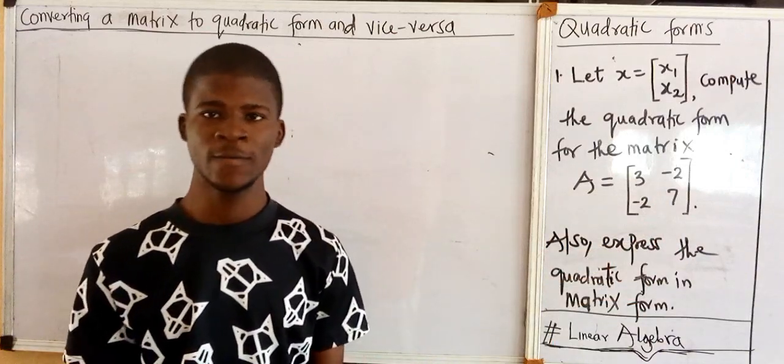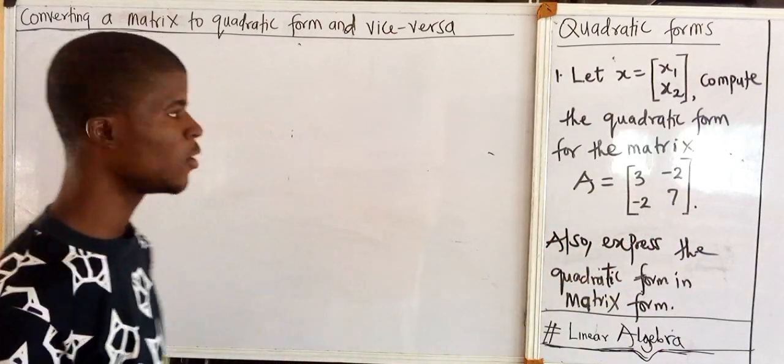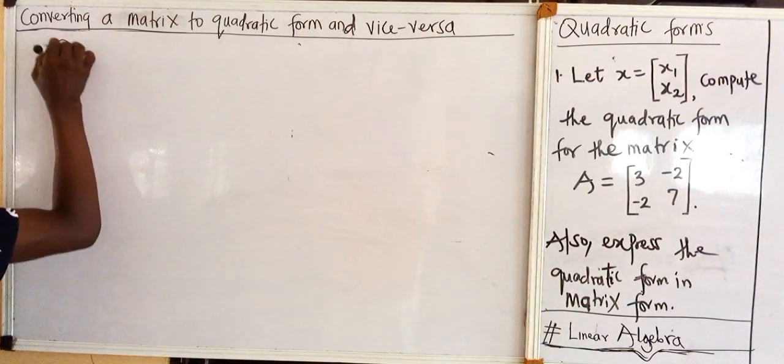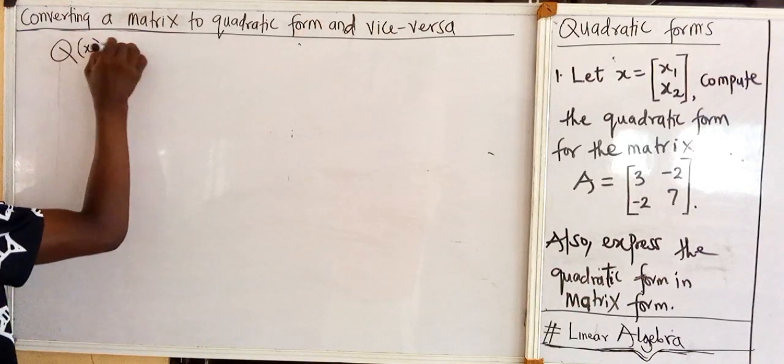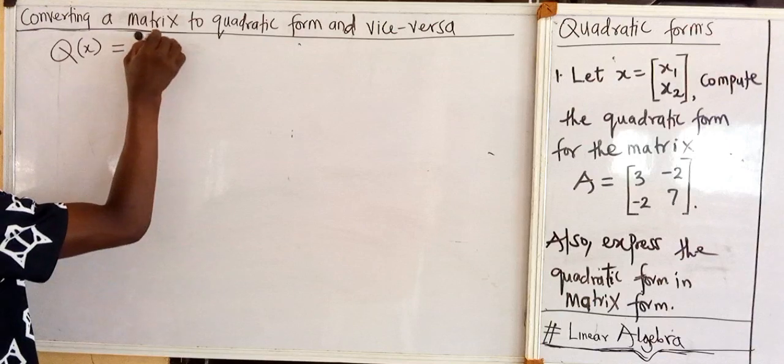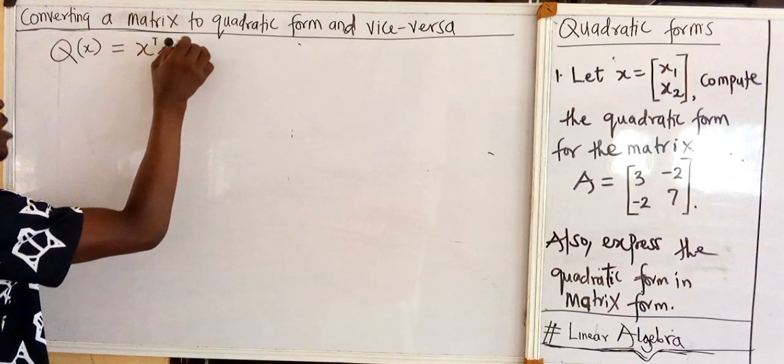What is a quadratic form? A quadratic form is any expression of this form. Q of x is equal to x transpose times A times x.